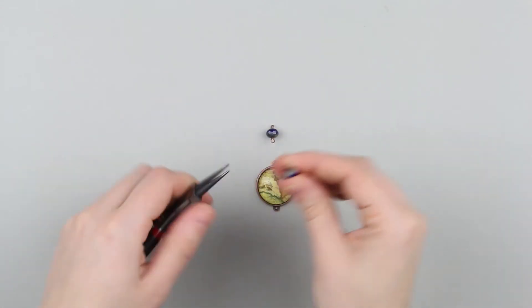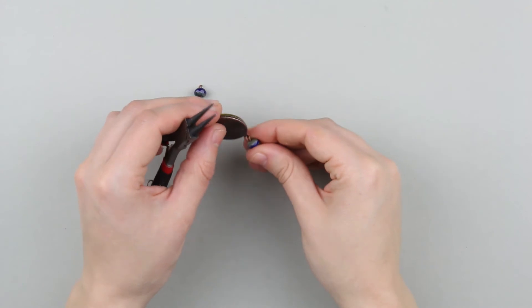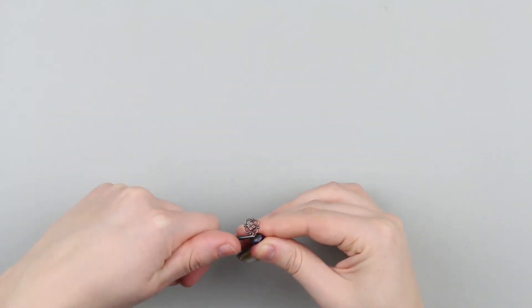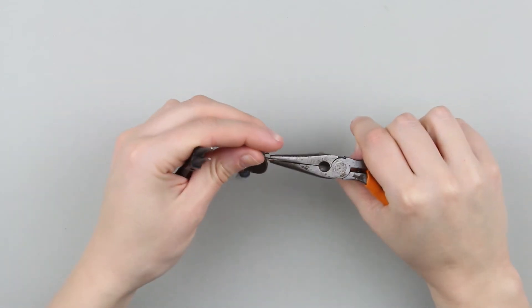Open the loops and put them onto the pendant. Attach a charm to one side. Attach a ring and chain to the other.